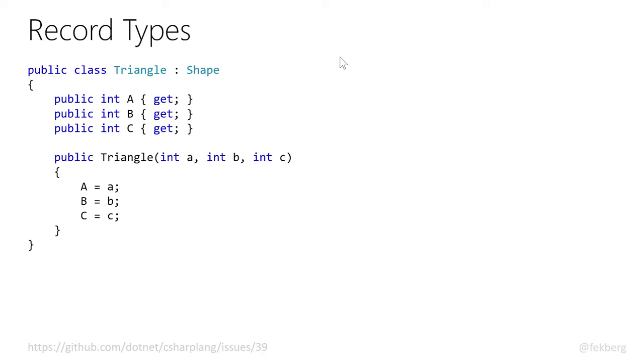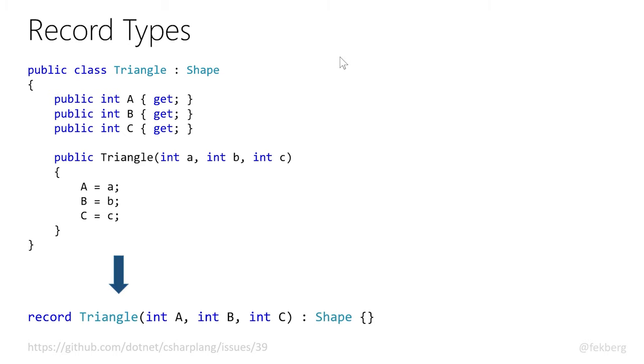Record types are something they've wanted to introduce since C# 6, when they started rewriting the compiler using the open-source Roslyn compiler written in C#. They wanted to allow us to describe our objects as records. That means taking a simple DTO — a Triangle with a base class requiring A, B, and C — and if we could simplify this into simply saying 'record Triangle(A, B, C)', you'd expect that to generate the same thing, but it generates a whole lot more. It introduces read-only properties, a constructor that injects A, B, and C by default.